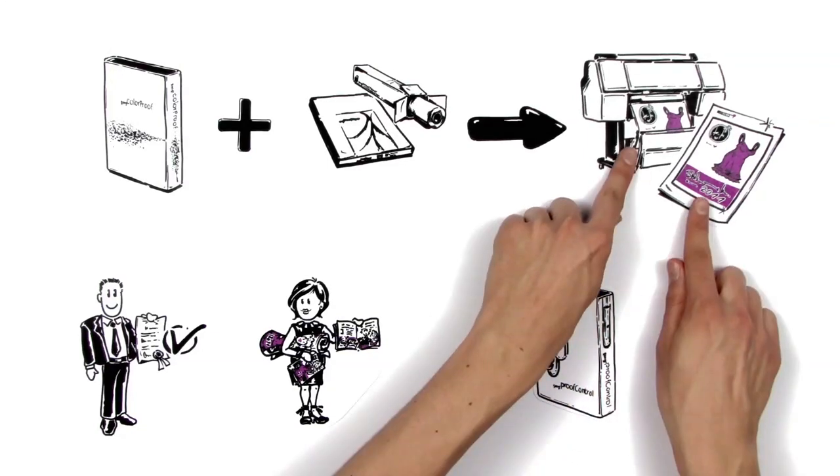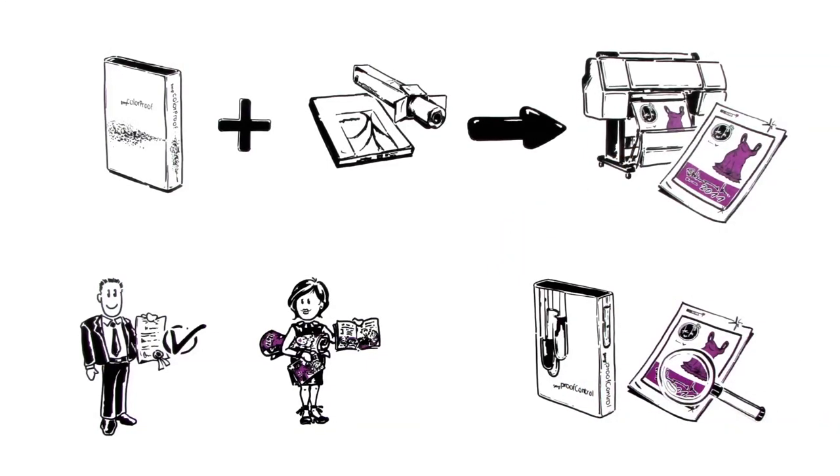GMG Proof Control Software checks the quality of the proof and guarantees color accuracy. The proof gives Katie and Mike maximum color control.